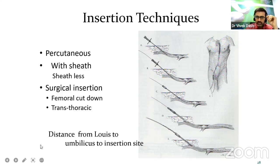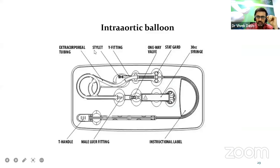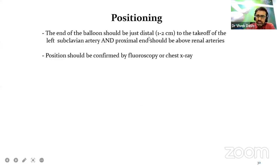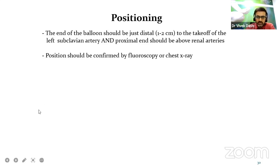The position of the tip of the IABP catheter is very essential to confirm. The end of the balloon should be just distal to the takeoff of the left subclavian artery, and the proximal end should be above the renal arteries. Position should be confirmed by fluoroscopy or chest X-ray.